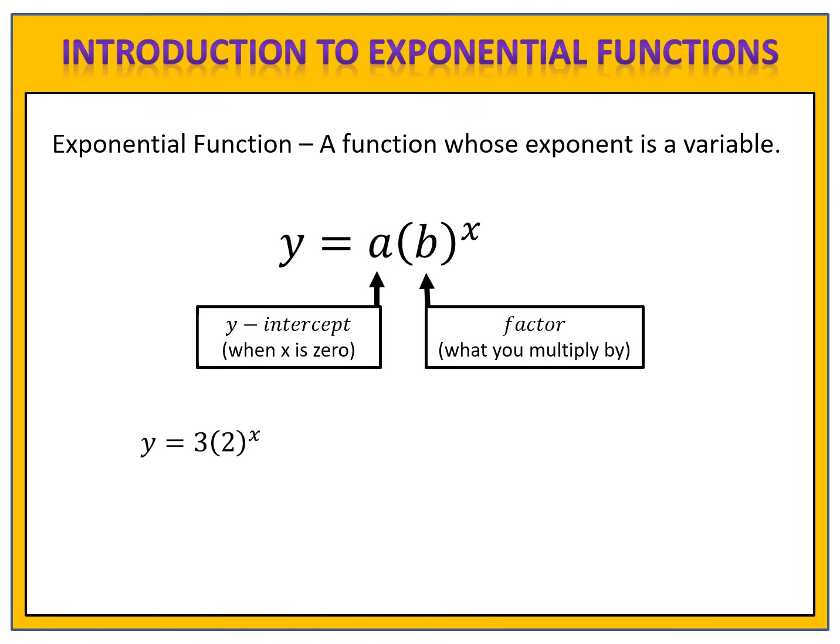Here's an example for you to try: y equals 3 times 2 to the x. Can you identify the y-intercept and the factor, and then create the input and output table? Please pause the video here and come back when you're ready to compare answers.